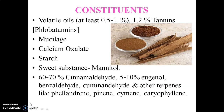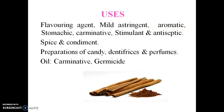Regarding chemical constituents, the volatile oil is the main content of cinnamon bark, containing about 0.5 to 1% volatile oil, then 1.2% tannins specifically known as phlobatannins. It also contains mucilage, calcium oxalate crystals, starch, and mannitol which is responsible for the sweet taste. The volatile oil contains 60 to 70% cinnamaldehyde, 5 to 10% eugenol, then benzaldehyde, cuminaldehyde, and other terpenes like phellandrene, pinene, cymene, and caryophyllene.